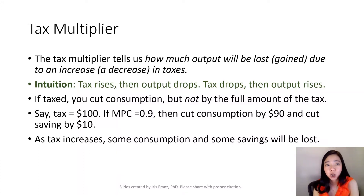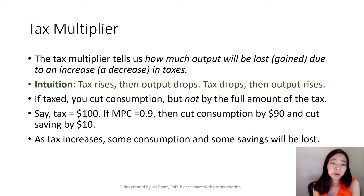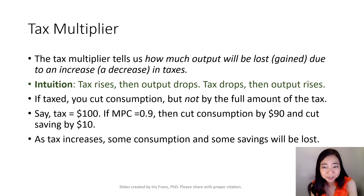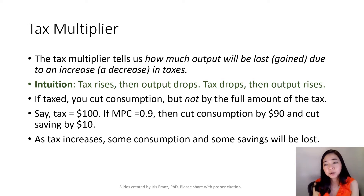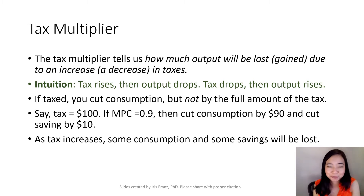Next we're going to talk about the tax multiplier. The tax multiplier tells us how much output will be lost as a result of an increase in tax, or how much output will be gained as a result of a tax cut. The intuition is simple: if your tax goes up, then output goes down; if your tax goes down, then output goes up.